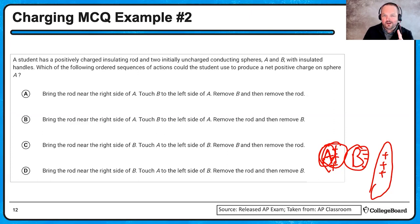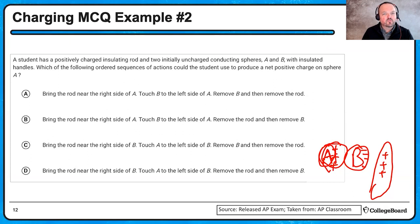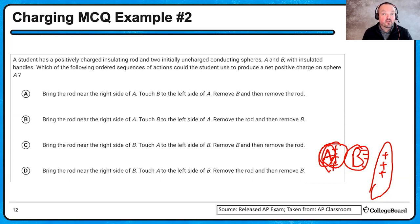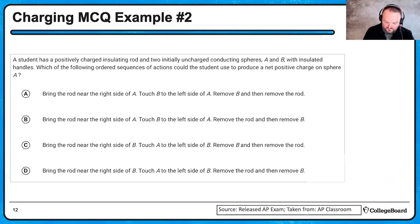Looking at choice C: bring the rod near the right side of B, touch A to the left side of B, then remove B and then the rod. It's really important that you remove B first and then remove the rod. If you remove the rod first, A and B will go back to neutral. You have to move A away from B while the rod is still present in order to keep that induced charge.